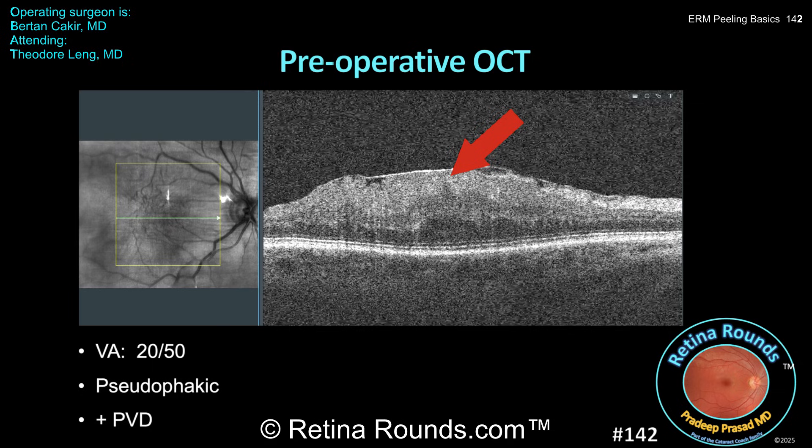The other finding is disorganization of the inner layers of the retina, most likely due to chronic tractional forces. These findings make this a stage 4 ERM, which carries with it a higher likelihood of poor vision at baseline and possibly poorer visual prognosis than lower-stage ERMs. At the end of the case, we'll review in more detail the staging of ERMs and other OCT biomarkers to be aware of.